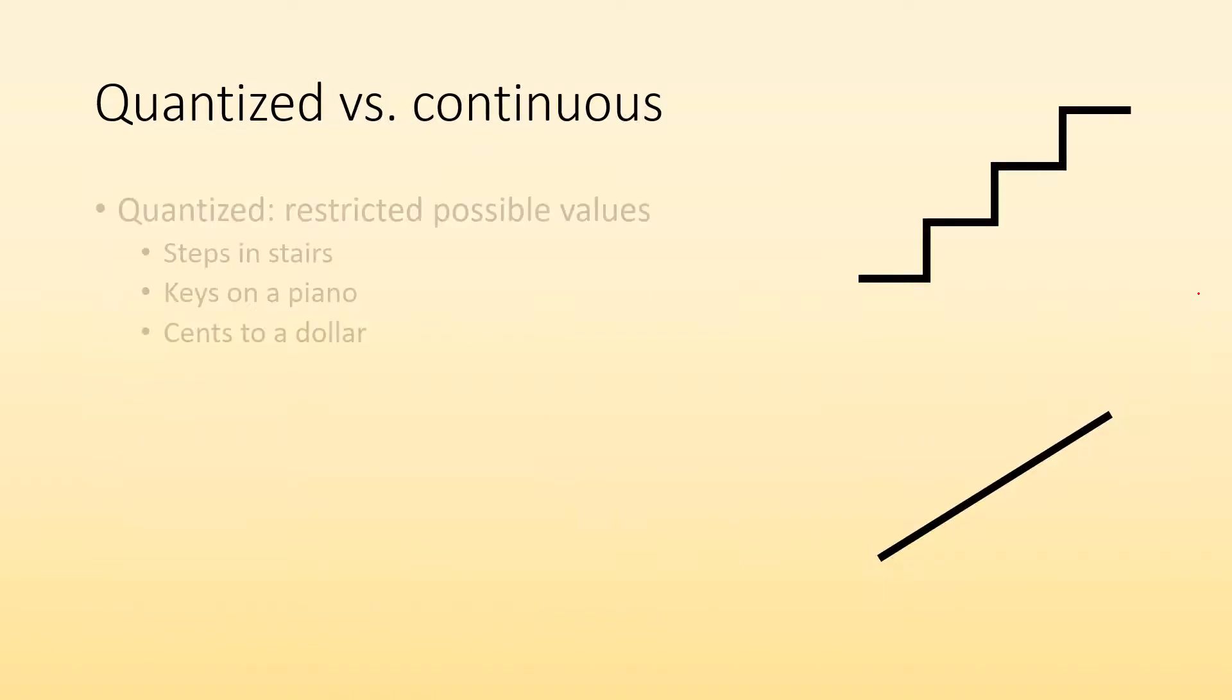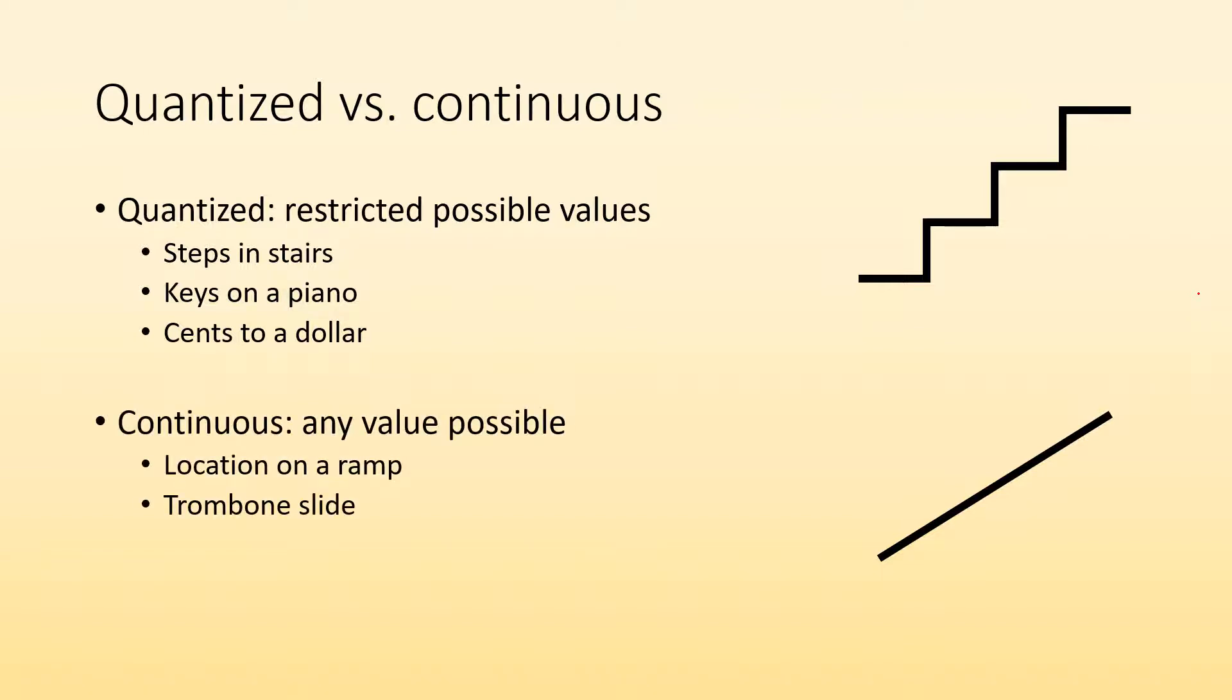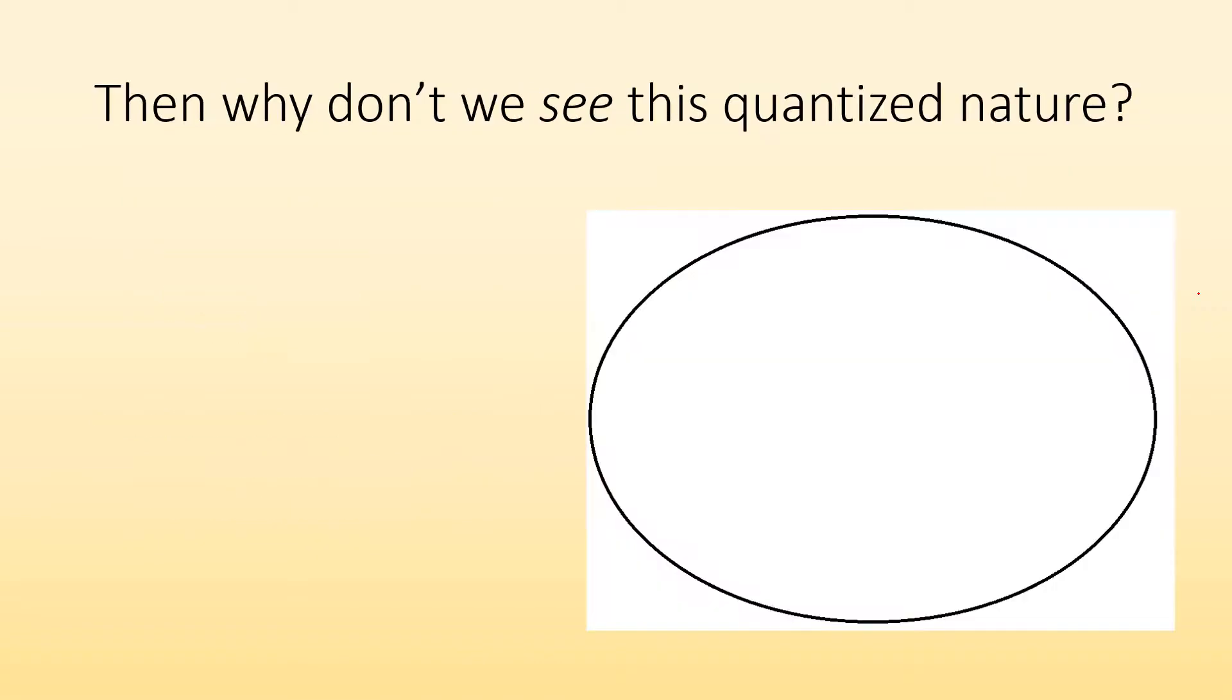Quantized versus continuous. Quantized means only specific values are possible. It's like steps in stairs, or keys on a piano, or cents in a dollar. You can only be on a particular step. You can't be in between them. You can hit a particular key on a piano. You can't half hit it. You can't hit in between it. Whereas continuous, any value is possible. It's like a ramp. You could stop at any point on the ramp and have a different height. Or trombones. You have that slide. You can stop at any point on that slide. That's an example of continuous.